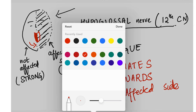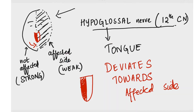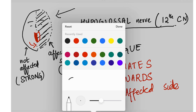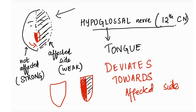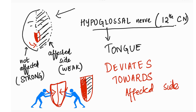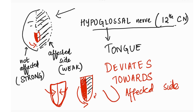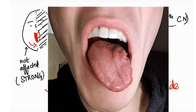In a normal tongue, there's force from the left and the right, so it's stable — it doesn't deviate to the left or the right. But here, since this part is strong, it pushes from one side, and the weak side can't push back strongly enough, so the tongue deviates to the affected or weak side. That's the hypoglossal nerve.